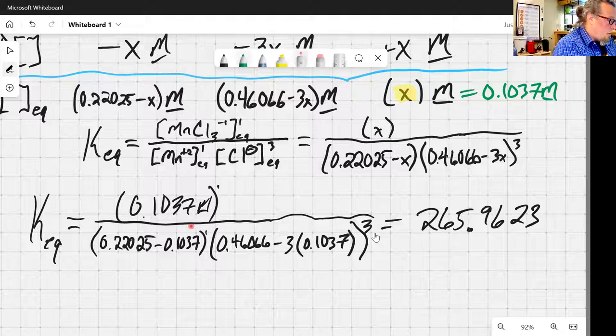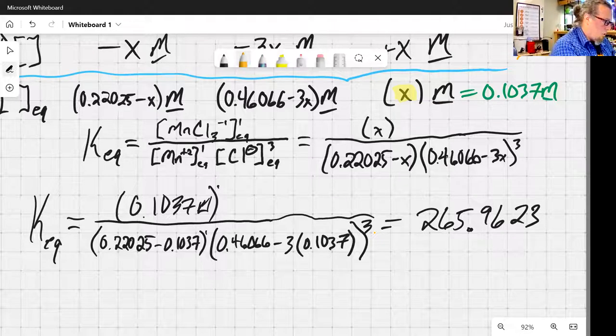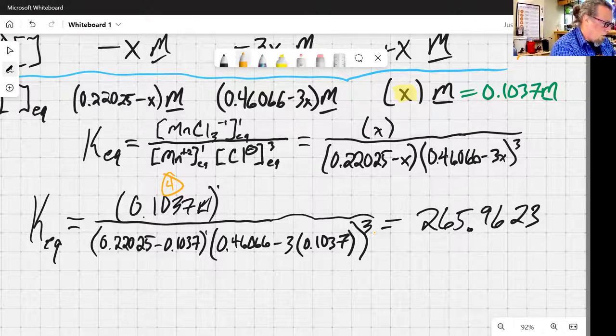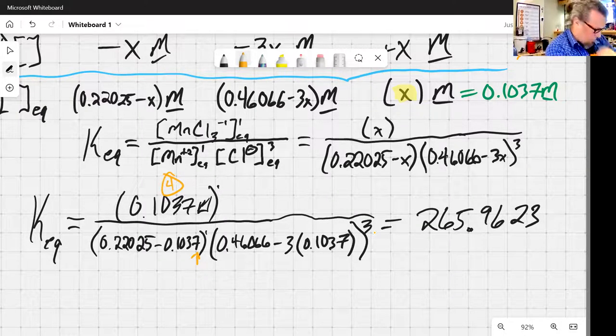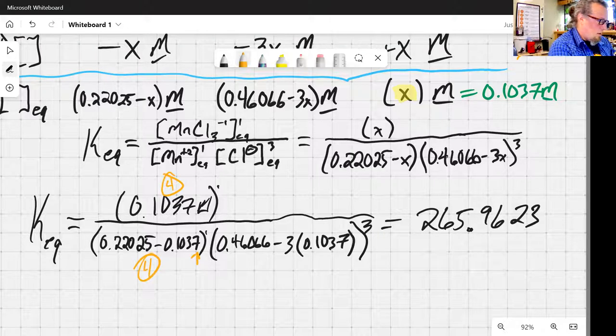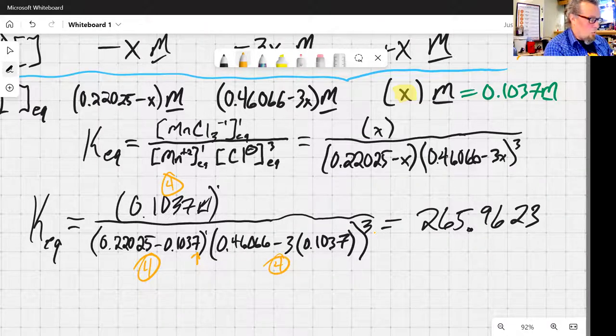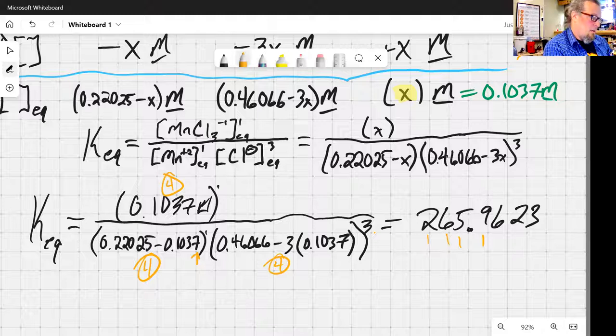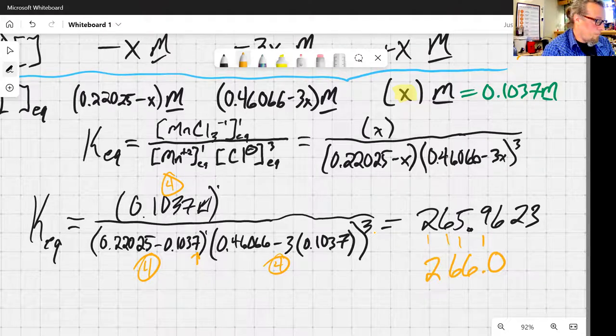So there's my value. I do still need to go in and make sure I'm good on those sig figs. So I've got four sig figs going in with that number. And looking at both of these, the result here is going to be to the fourth decimal place. And when I do that subtraction, the fourth decimal place is going to be four sig figs. So four there. And here I've got three, that's going to be 0.3. Yeah, that's going to be four sig figs there as well. So rounding this off appropriately to four sig figs, I should report this as 266.0. And that's my equilibrium constant.